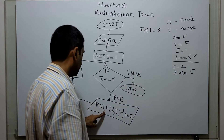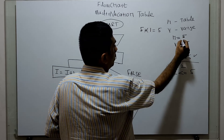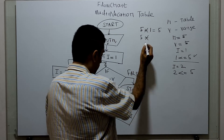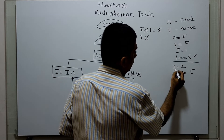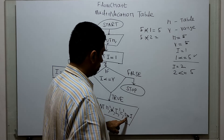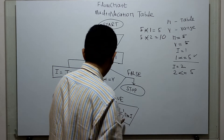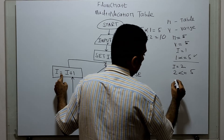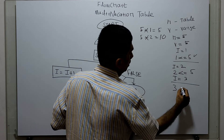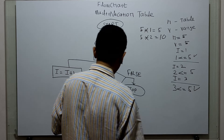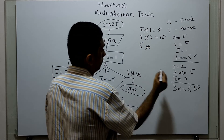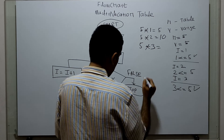So this is my output. Printing: n value is 5, multiplication symbol, i value is 2, equal to symbol, n times i that means 5 times 2 equal to 10. Incrementing i by 1, now i equal to 3. Check: 3 less than or equal to 5 — condition is true. So I will print n times i, i value is 3, equal to symbol, n times i.